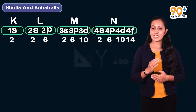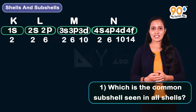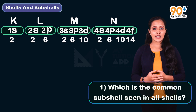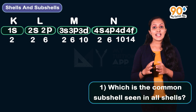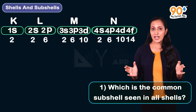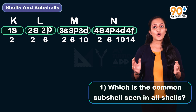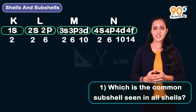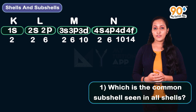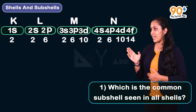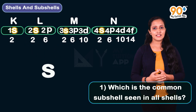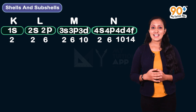Here is the first question: Which is the common subshell that is seen in all the shells? From the flowchart, it is clear that the answer is S, as the S subshell appears in every shell.